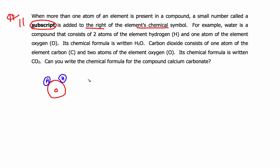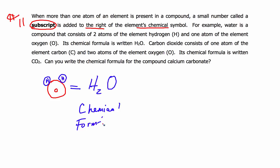If we wanted to write the chemical symbol for this molecule, we would write H with a little 2 and then O for oxygen. That little 2 tells me, when I read this chemical formula, that there will be that many of those atoms in the molecule — so two hydrogen atoms. A subscript written to the right of a symbol, or any other symbol, tells me how many of those atoms are in the molecule.